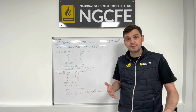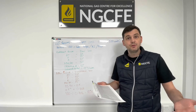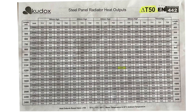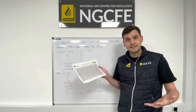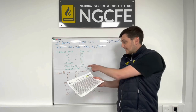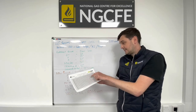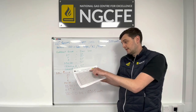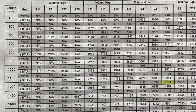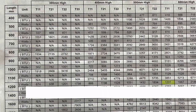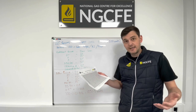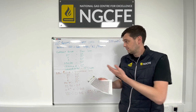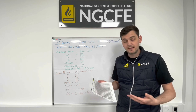It's a Kudox radiator — what Screwfix provides — and I've got the output chart for Kudox radiators here. At a catalogue DT of 50 — flow 70, room 20 — a 1200 by 600 Type 11 radiator gives 1231 watts. That's 1231 watts of heat output into the room every second it's in operation, with a flow of 75 and return of 65 from this existing non-condensing Baxi Solo with a DT of 10.